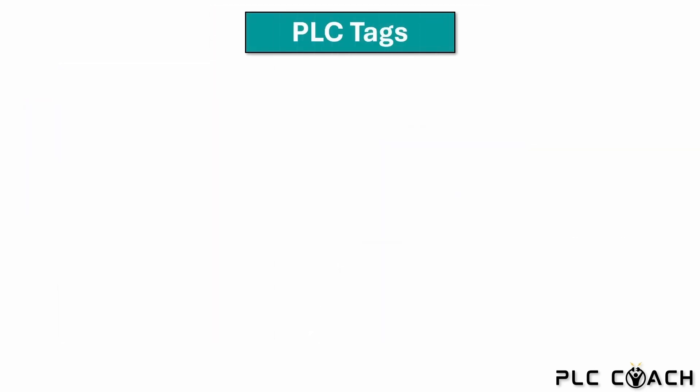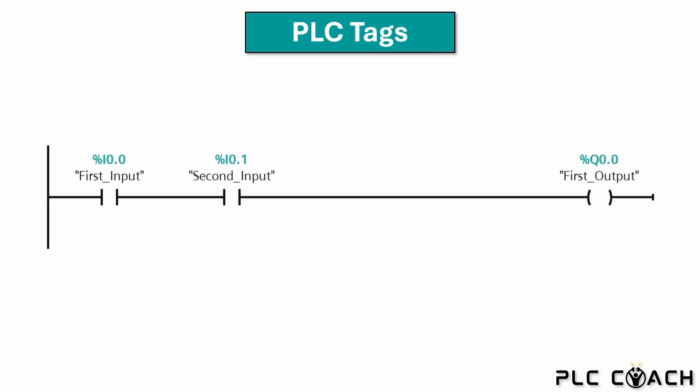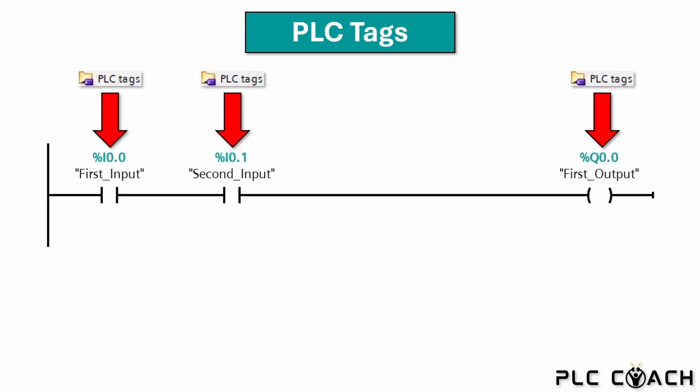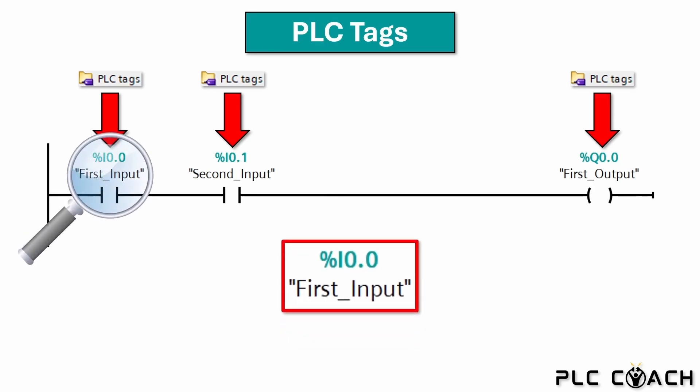Here is an example of a very simple PLC program. These elements are called PLC tags. They act as a bridge between the PLC program and the physical inputs and outputs of the controller. Let's take a closer look and explore this in more detail.